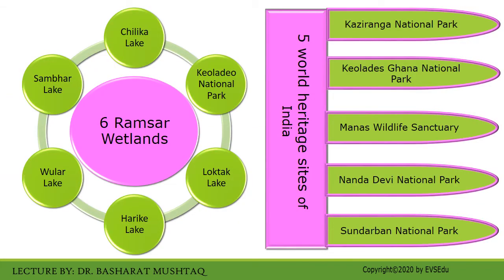In addition to the already mentioned salient features, India consists of six Ramsar wetlands and five world heritage sites. Among these world heritage sites, Kaziranga National Park is the first Indian national park to be listed.